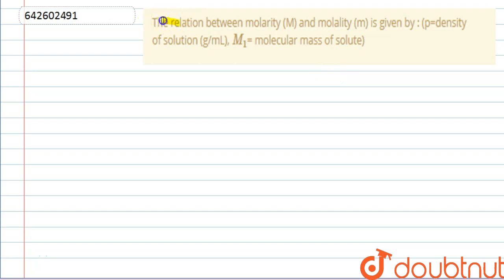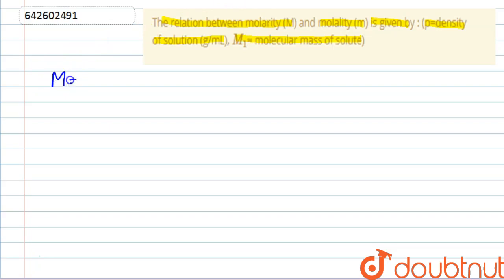Hello everyone. Let's start with this question. The question asks: what is the relation between molarity (capital M) and molality (small m)? We are given rho as the density of solution in grams per mL, and M1 as the molecular mass of the solute.